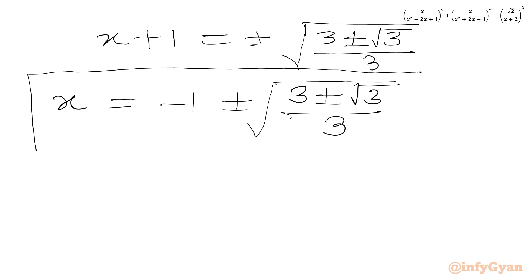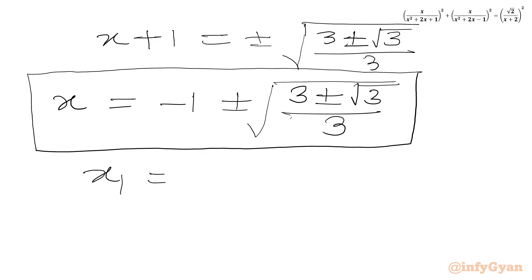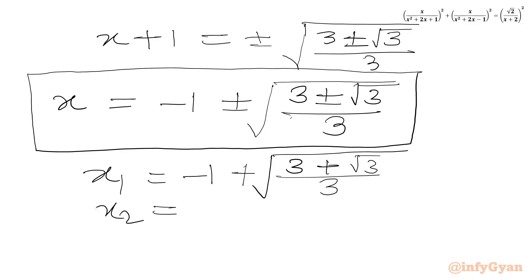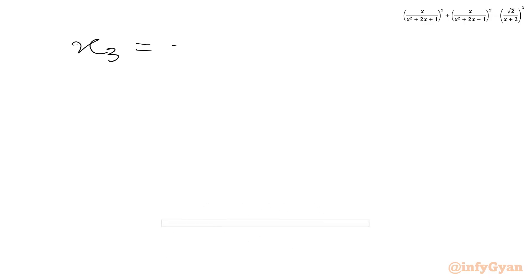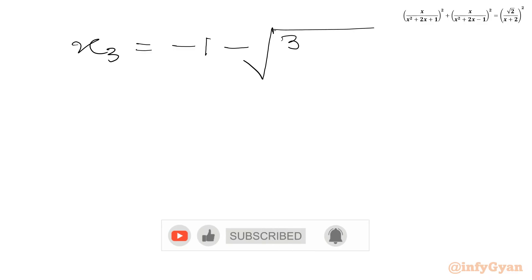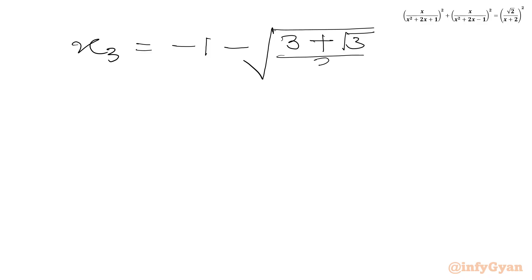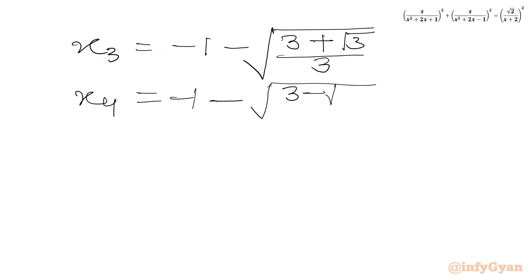So x = −1 ± √[(3 ± √3)/3]. Here we have four solutions: x₁ = −1 + √[(3 + √3)/3], x₂ = −1 − √[(3 + √3)/3], x₃ = −1 + √[(3 − √3)/3], and x₄ = −1 − √[(3 − √3)/3]. These are our four real solutions.